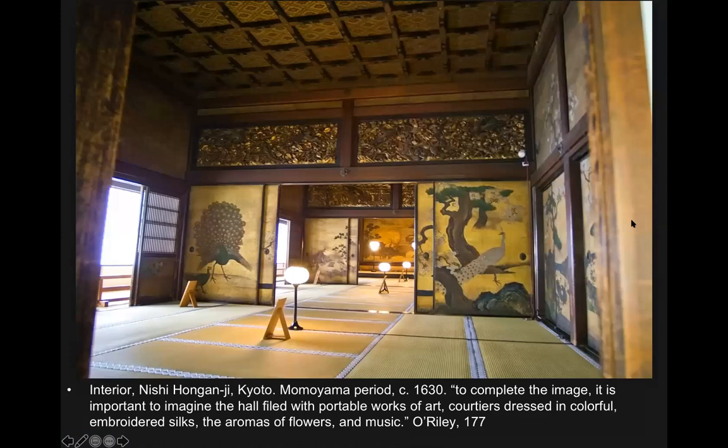On the inside, you have things that are quite ostentatious. The style of architecture we see on the interior of these castles is very dense and full of wealthy materials, which is going to be a big contrast to the tea houses that also develop during this period. To complete the image, it's important to imagine the hall filled with portable works of art, courtiers dressed in colorful embroidered silks, the aromas of flowers and music — think of the Tang dynasty with its overwhelming amounts of color, design, and density. We'll talk about these gold byobu screens in a little bit.